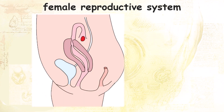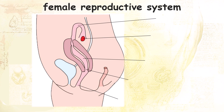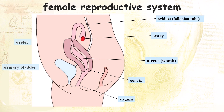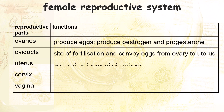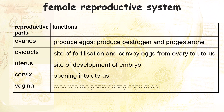This is the side view of the female reproductive system. See if you can recognize all five parts. If you are wondering, the location of the urinary bladder and ureter is down here, and here is the summary of the parts of the female reproductive system and their respective functions.